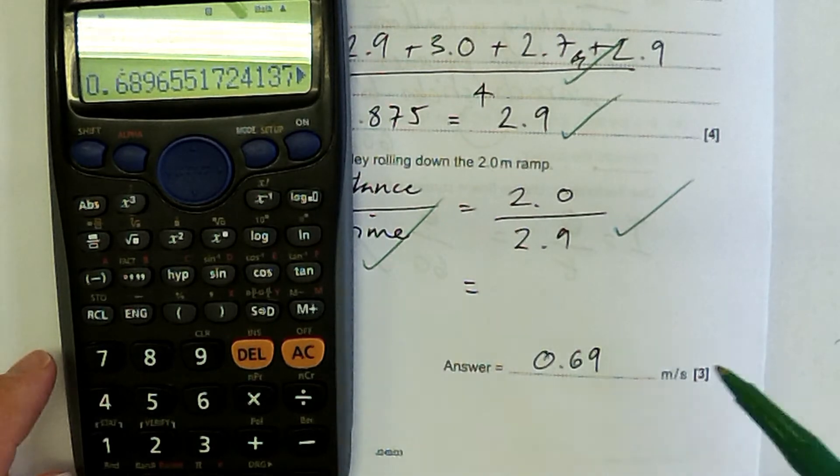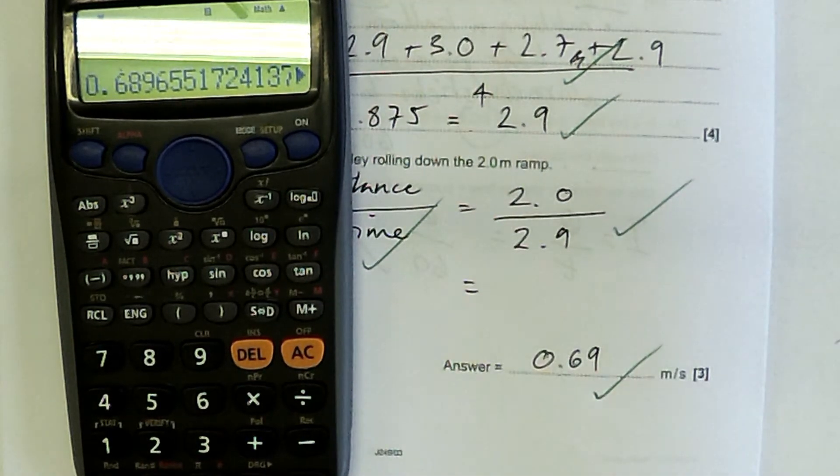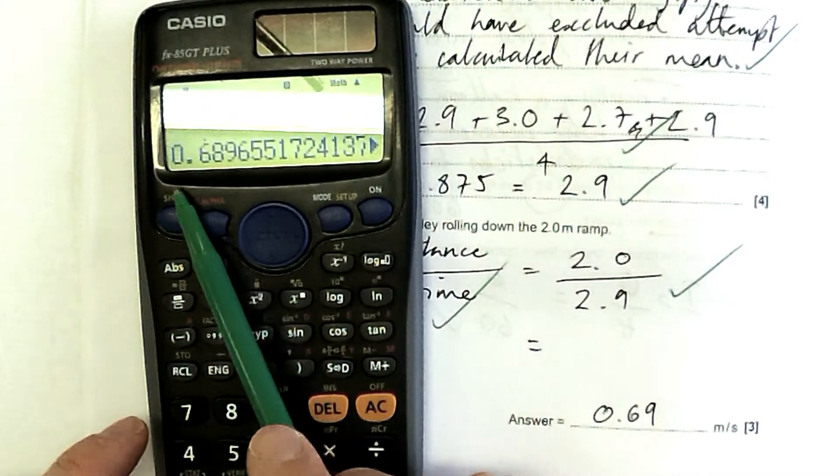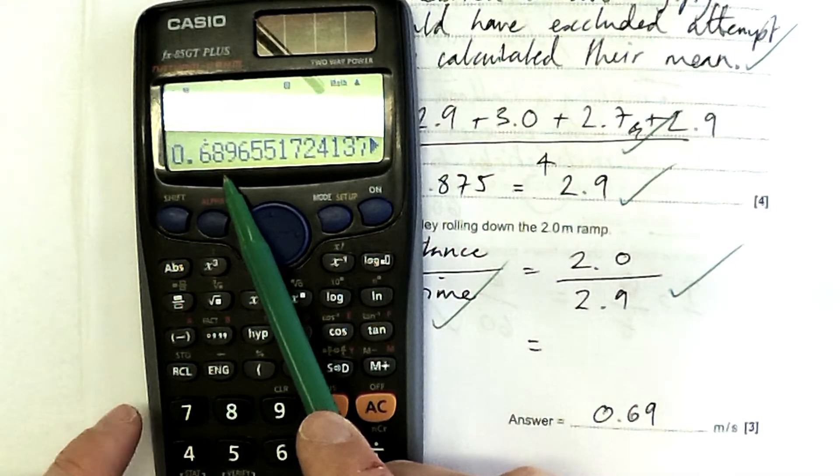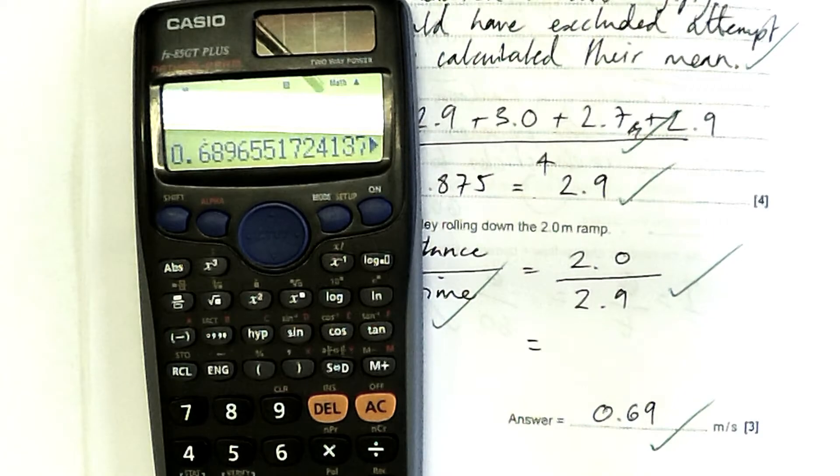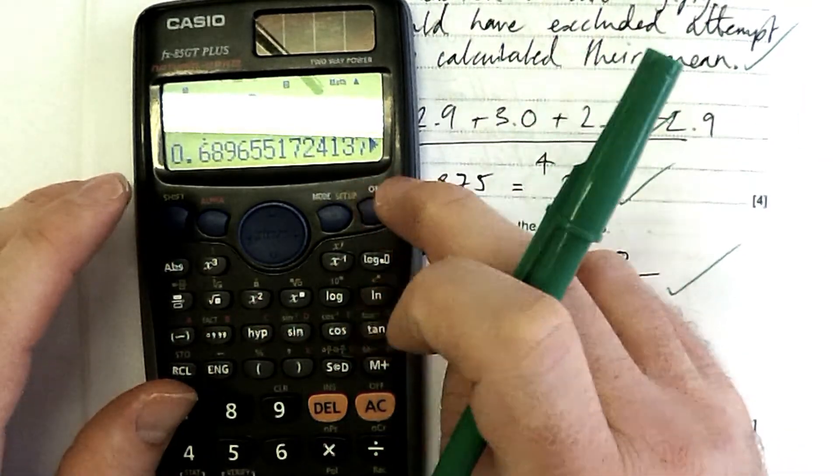So mark then for just remembering the equation 2.0 over 2.9. A good habit to be into is actually doing the rounding but be careful, 0.68 is not the answer. You would not get that final mark if you had rounded that incorrectly so be really careful when you do your roundings.